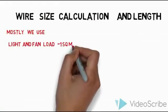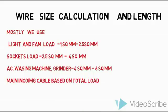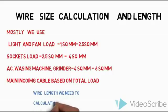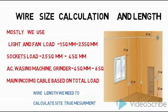Next is the wire calculation. We must calculate the direct and fan load. You can use the main incoming current to determine the wire size. Using the wire length after accounting for wall routing, you can select the appropriate wire size.